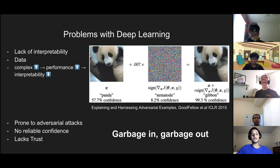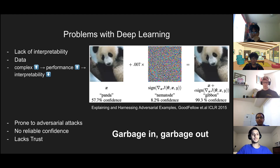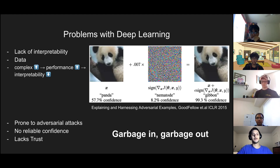This builds up to some common problems with deep learning. The first is: the more complex the model — the more parameters and connections between layers — the harder it is to understand what's going on. At the same time, performance goes up because the more complex the model, the more nuanced representations it can learn. Logistic regression is simple and highly interpretable, but cannot capture higher-order interactions between data points as compared to a neural network. This leads to the key problem: the lack of interpretability in deep learning models.